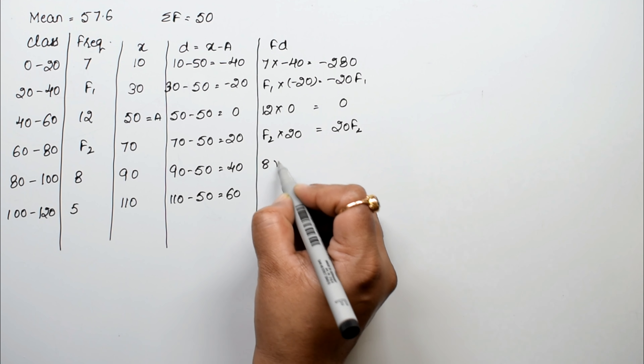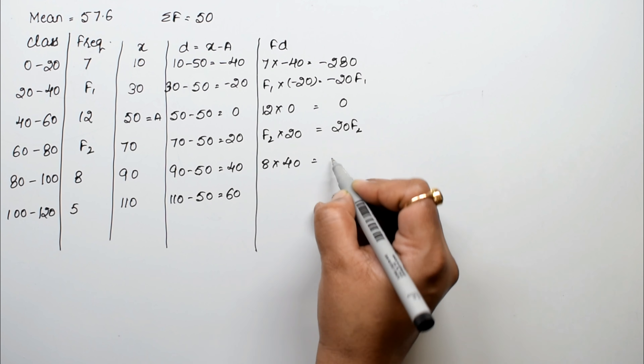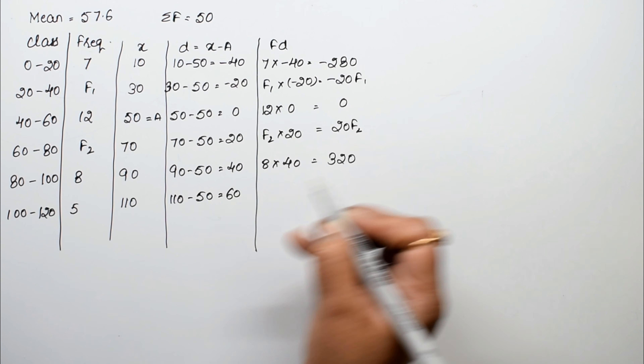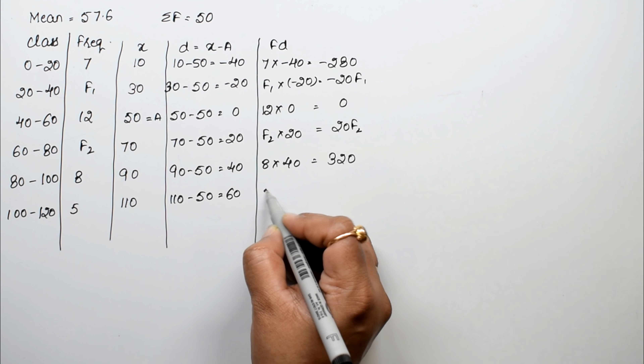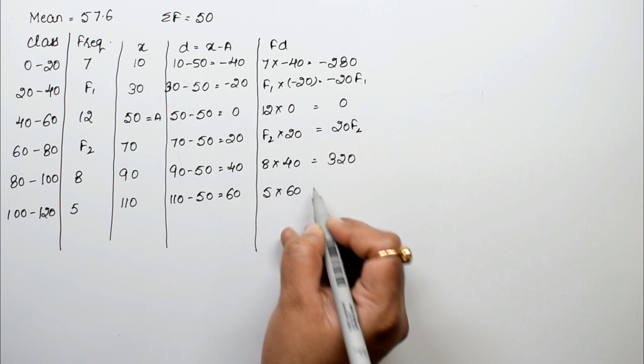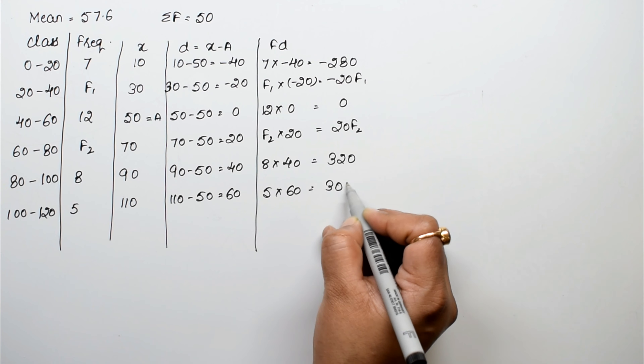Continuing the fd column: 8 into 40 equals 320, and 5 into 60 equals 300.